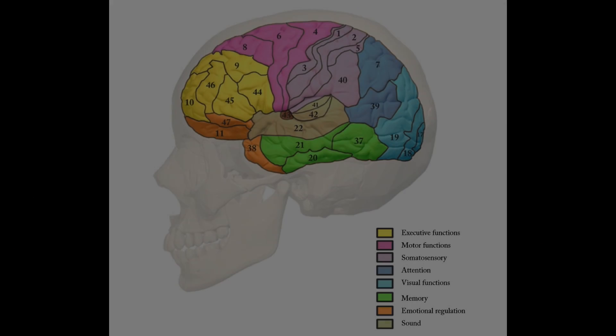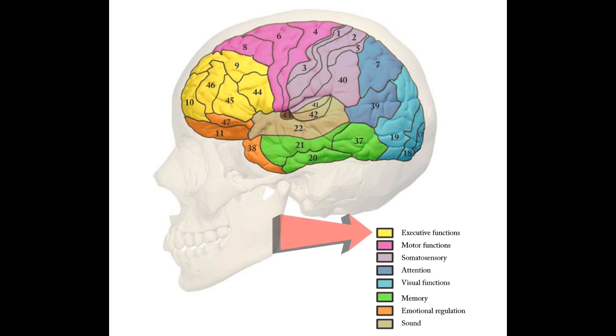Basically what we identified was there was some down regulation of activity in executive functioning networks, and those are located in the forebrain. Some examples would be the dorsolateral prefrontal cortex, which is located approximately here in the forehead.